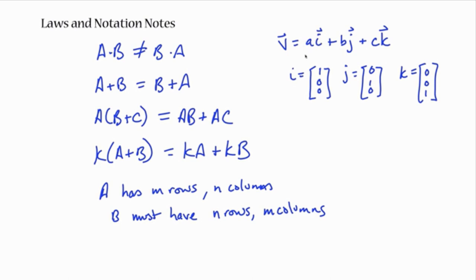So a times i just means you're going a steps in the i direction — the x direction. i is typically what we think of as the x direction, j is the y direction, and k is the z direction. It comes up a lot in physics. So if you see this notation with i's, j's, and k's, they're unit vectors and they imply directionality in x, y, z coordinate space.